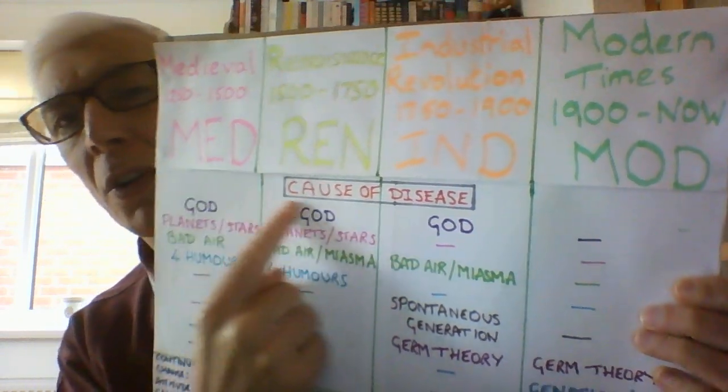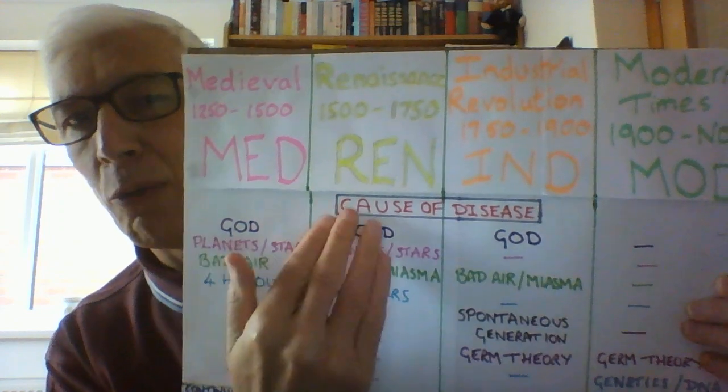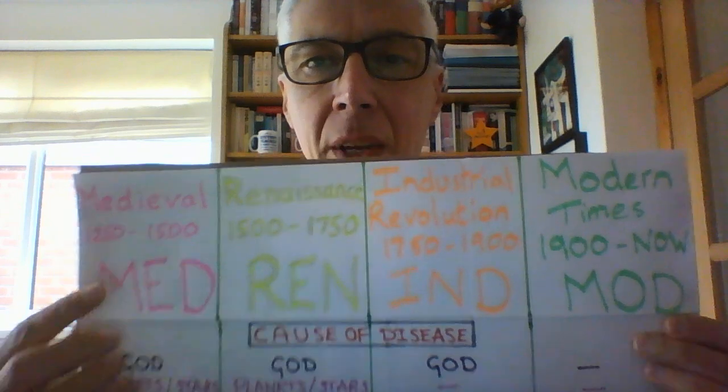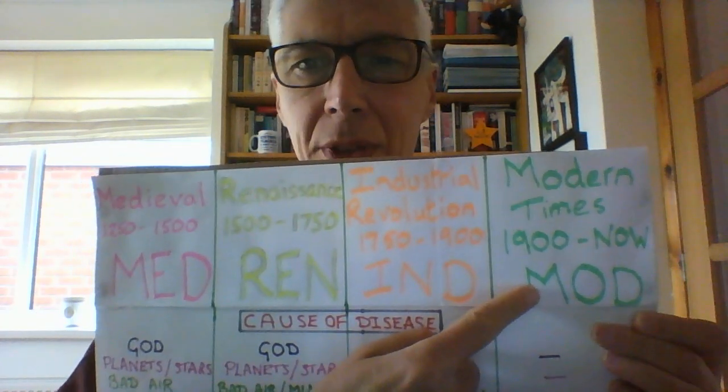The different ideas throughout the medicine course of what they believed caused disease. Now, the first thing you have to do is understand chronology. Chronology comes from an old word, 'chronos,' which means time. You've got to get the periods of history in the correct chronological order: Medieval, Renaissance, Industrial Revolution, Modern times.